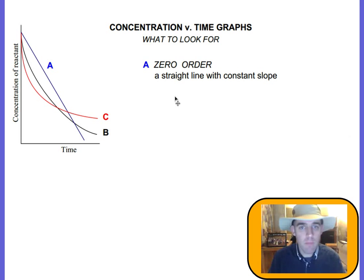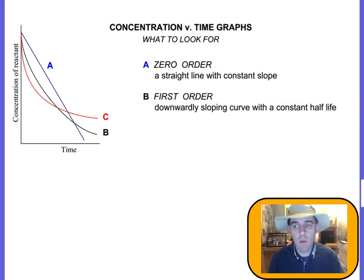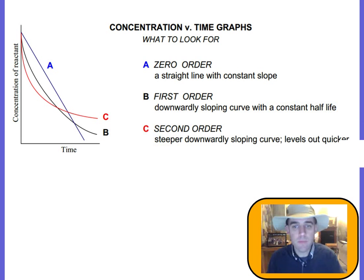If we look at B, B is first order. It's downwardly sloping and has a constant half-life. Half-life is the time it takes for the concentration of the reactant to go down by half. We'll look at that more closely in a minute. And C is second order. It's steeper than B and levels out quicker.